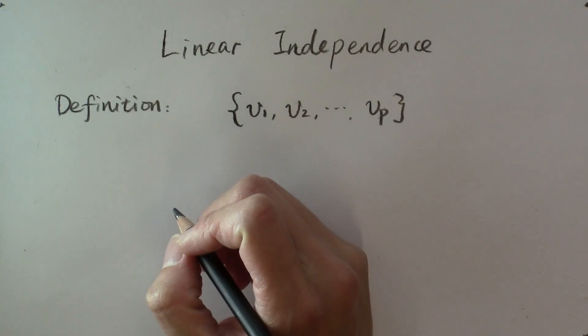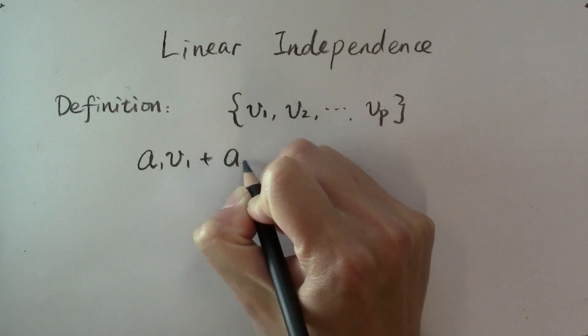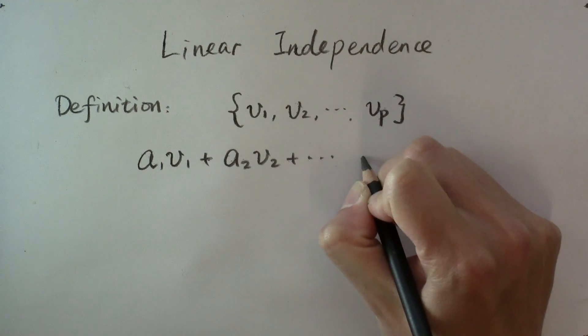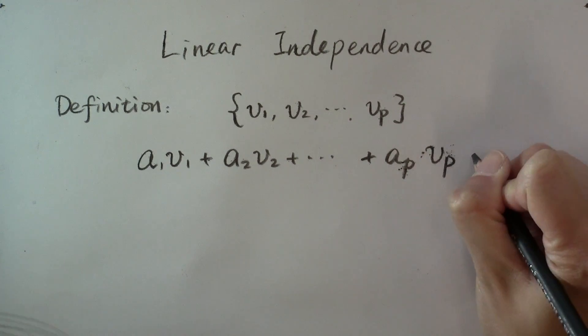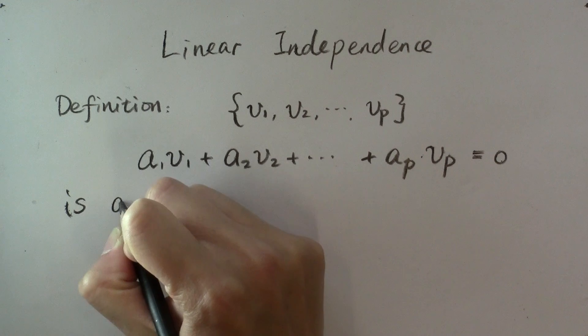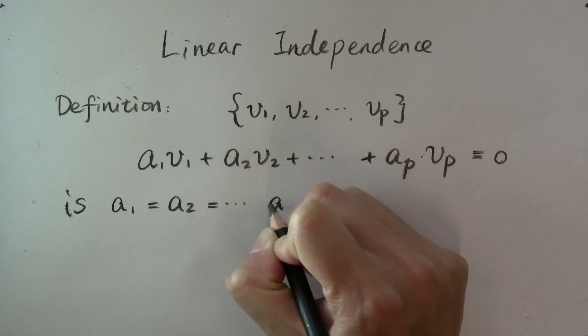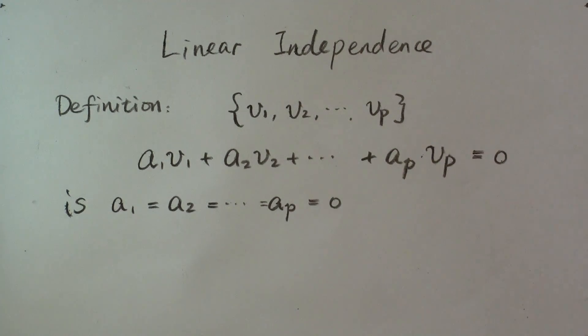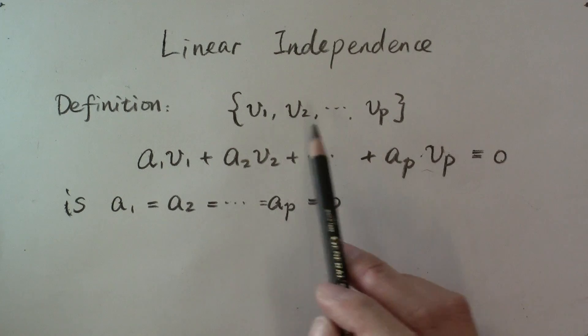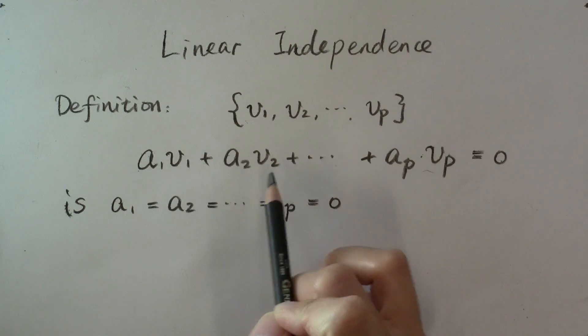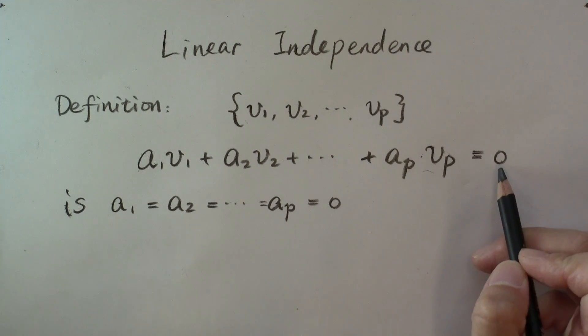If the only solution to the following equation, a1 times v1 plus a2 times v2, et cetera, plus a_p times v_p equal to zero is that all these coefficients a1, a2, to a_p have to be all zero. That means you cannot have a linear combination of this set of vectors that has a set of coefficients not completely zero for the linear combination to be zero.